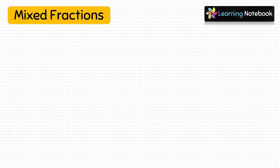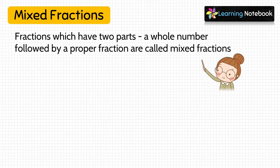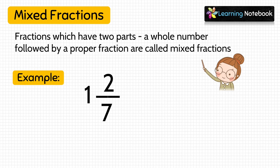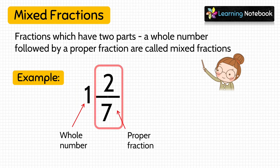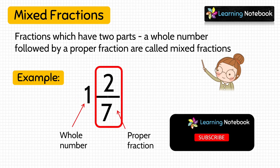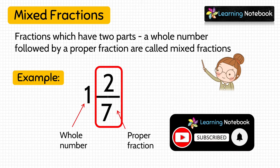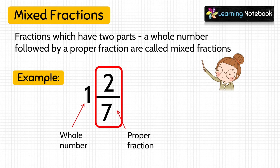Now let's understand mixed fractions. Fractions which have two parts — a whole number followed by a proper fraction — are called mixed fractions. For example, 1 and 2 by 7: here 1 is the whole number and 2 by 7 is a proper fraction. So 1 and 2 by 7 is a mixed fraction because it has two parts — a whole number and a proper fraction.